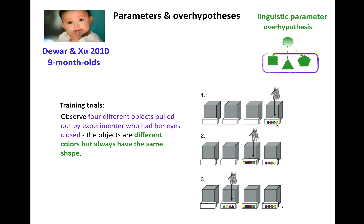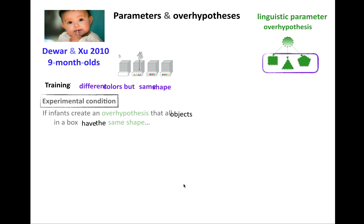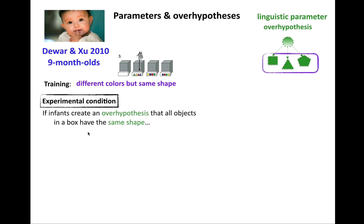In the training trials, infants observed four different objects being pulled out by an experimenter who had her eyes closed, so she's drawing randomly. In the first box there are four circles, in the second box there are four squares, in the third box there are four triangles. The objects are different colors but always have the same shape. The idea is that infants would notice this, and form an over hypothesis that all objects in a box have the same shape.